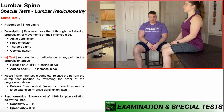To perform the slump test, the patient is going to be positioned in short sitting off the edge of the table. The PT is going to passively move the patient through a progression of movements on their involved side — the side with radicular symptoms. For example, suppose this patient has a suspected lumbar radiculopathy and complains of radicular symptoms going down her right lower extremity.